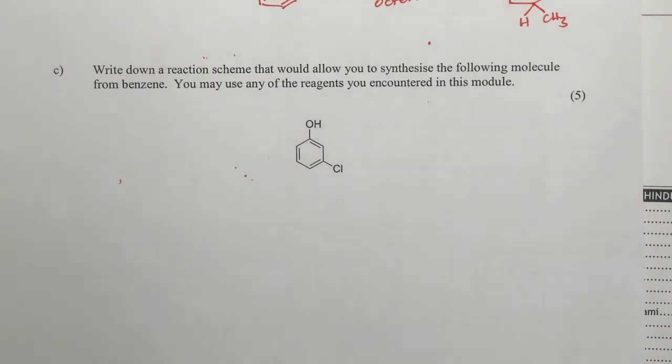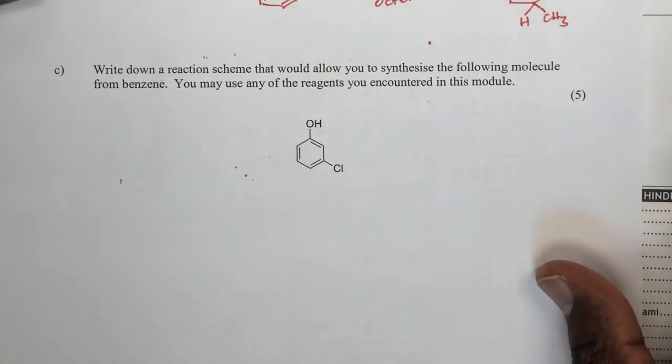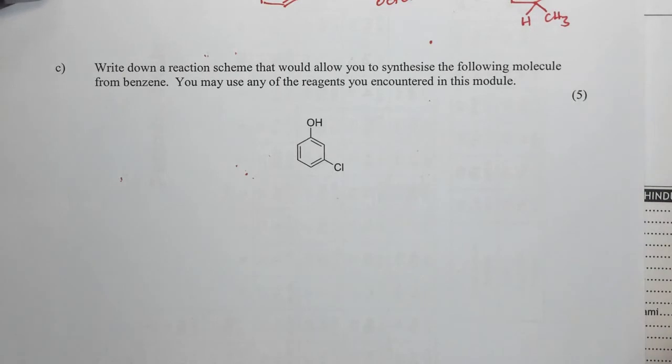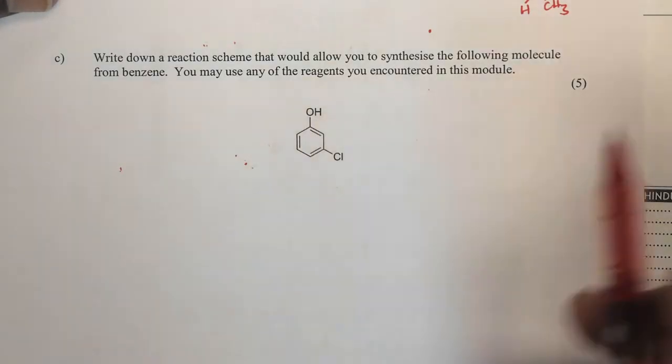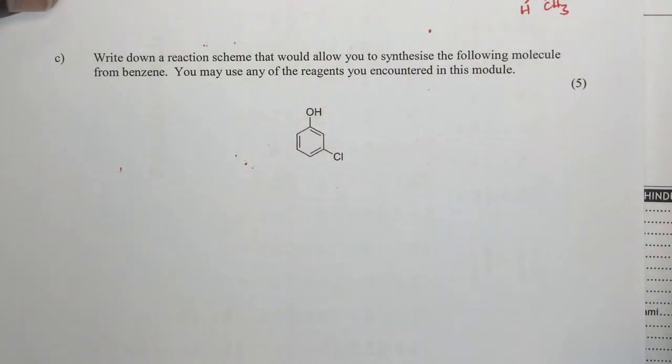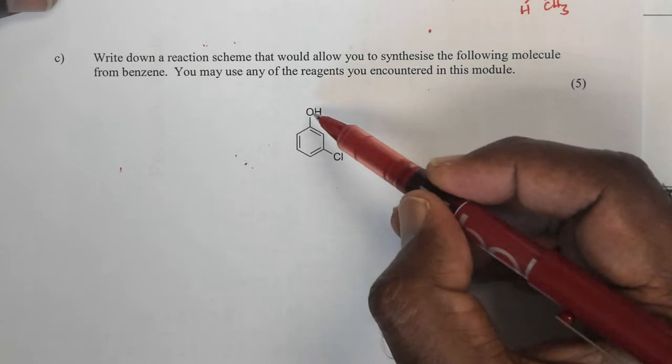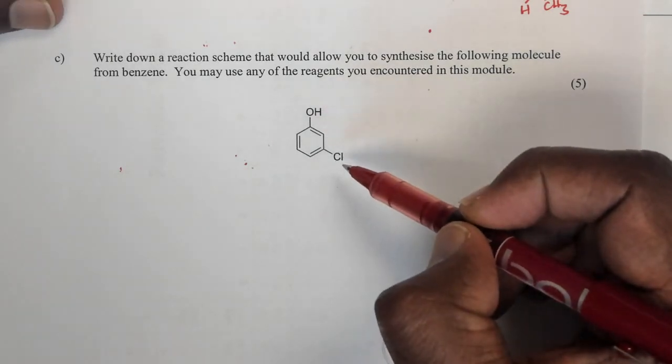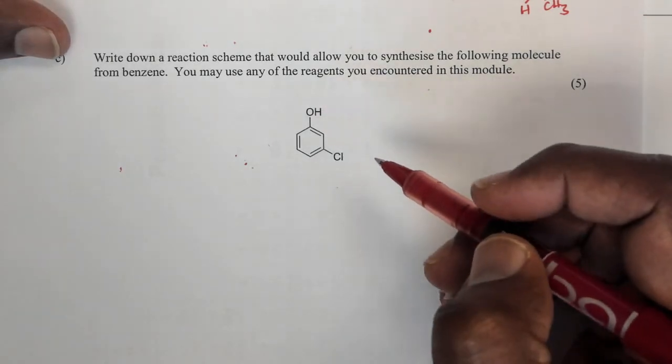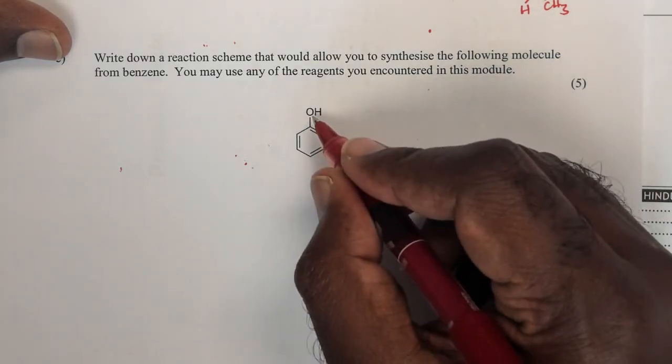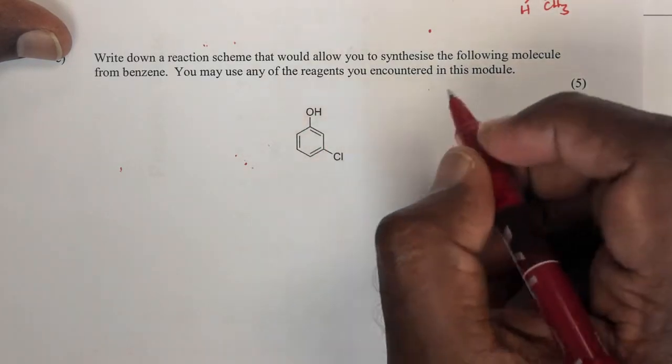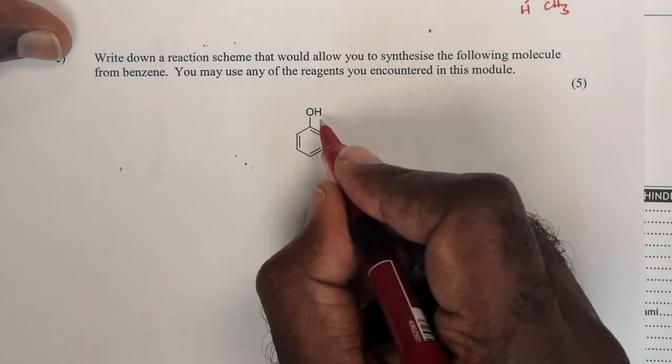So the question says, write down a scheme that would allow you to synthesize the following molecule from benzene. You may use any of the reagents you encountered in this module. And let's study this molecule a bit further. So this molecule has two substituents, a hydroxy substituent and a chlorine substituent. And you'll find that if I look at the directing properties of each, because in order to put this one, I'll have to put one group in first and then use that to direct the other group.